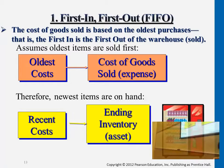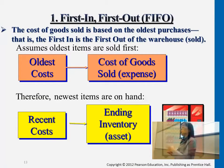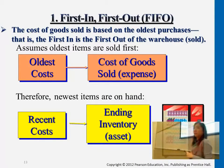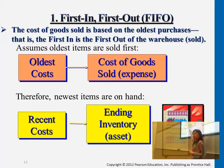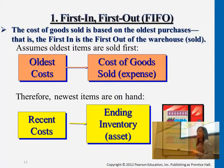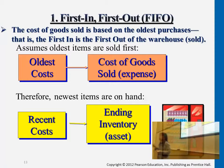Even though in reality perhaps the customer is actually purchasing from the latest batch, we still assume they're purchasing the oldest cost first. On the other hand, since the oldest cost turns into cost of goods sold, the recent cost — when we count inventory still in our warehouse — becomes ending inventory, which is the inventory asset you see on the balance sheet.